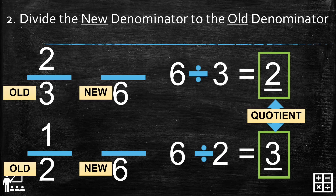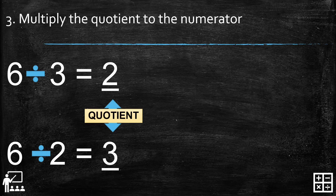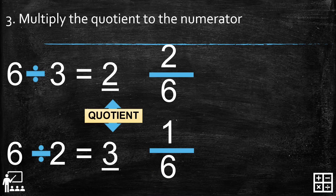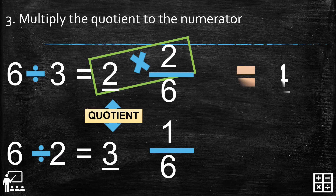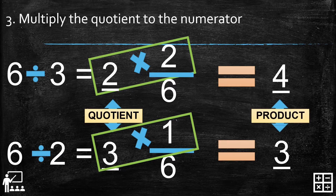The quotient is the answer to the division sentence. Step 3: multiply the quotient by the numerator. Our quotients are 2 and 3, and our numerators are 2 and 1. So we multiply: 2 times 2 gives you 4, and 3 multiplied by 1 gives you 3. So 4 and 3 are our products.